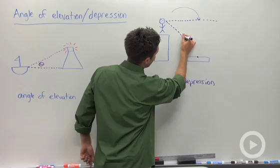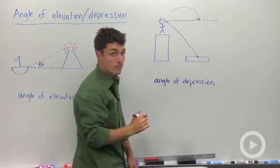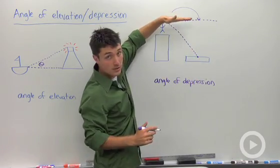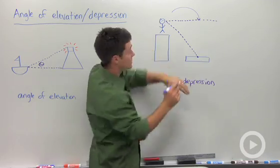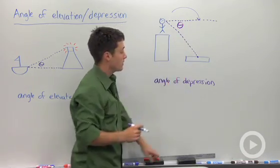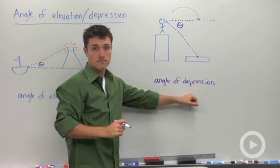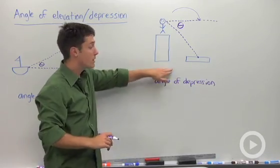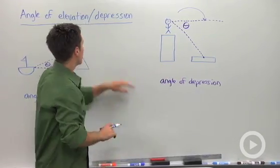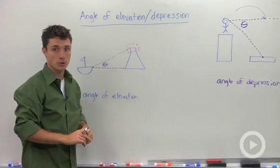If I draw in a line there, that angle between the horizontal and the angle of where he wants to land would be theta, our angle of depression. So keep that in mind, draw pictures whenever you have a word problem that uses angle of elevation and angle of depression.